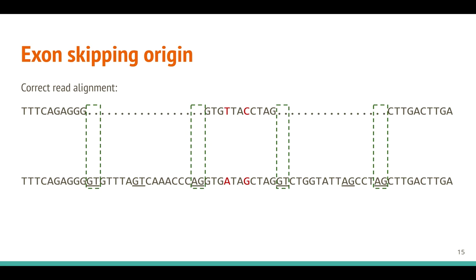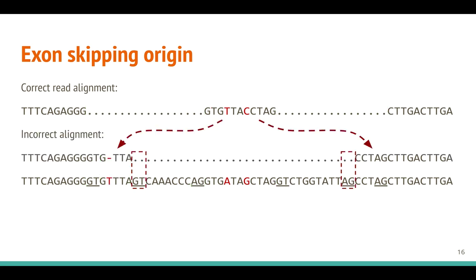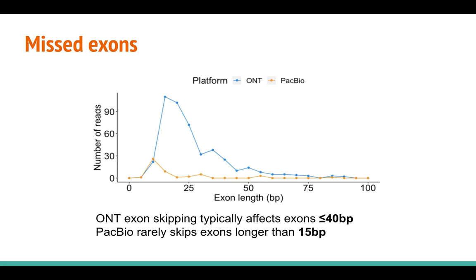Here we show an example of an exon skipping event. If an exon is relatively short, the aligner software can erroneously map a read and skip this exon. PacBio and nanopore skip exons shorter than 15 bases with similar frequency. However, ONT exon skipping also affects exons up to 40 base pairs in length.